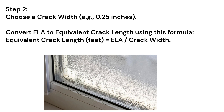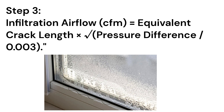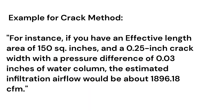Convert the effective leakage area to equivalent crack length using this formula: equivalent crack length (in feet) equals effective leakage area divided by crack width. Step 3: use this formula to calculate the final infiltration rate. For instance, if you have an effective leakage area of 150 square inches and a 0.25-inch crack width with a pressure difference of 0.03 inches of water column, the estimated infiltration airflow would be about 1,896.18 CFM.